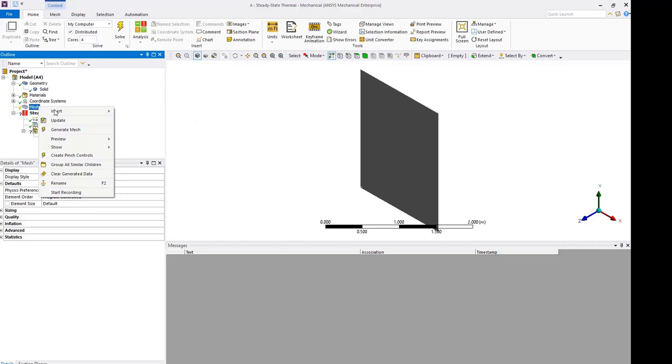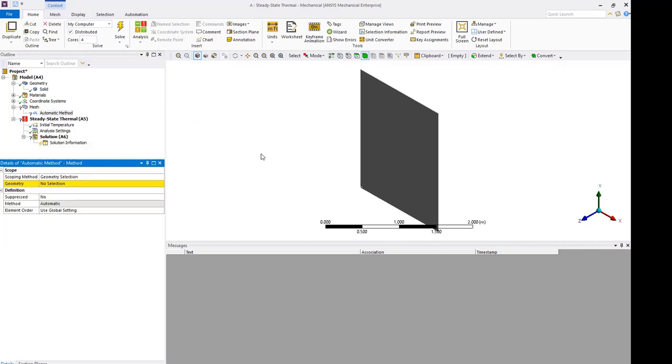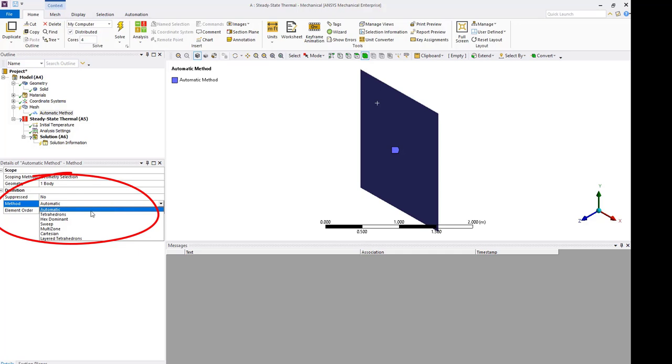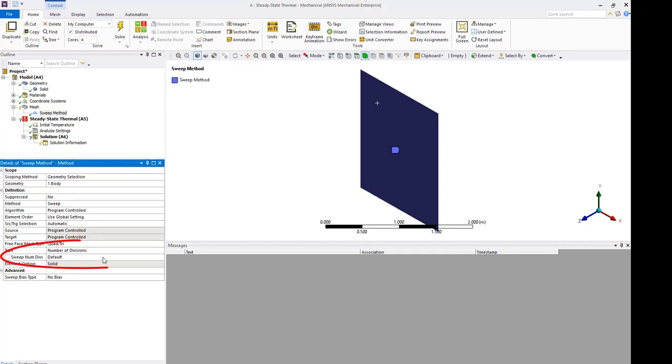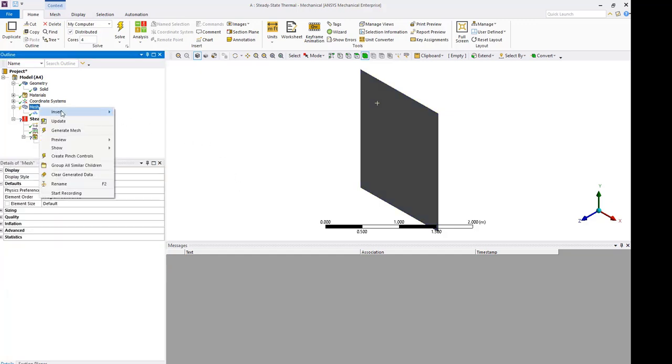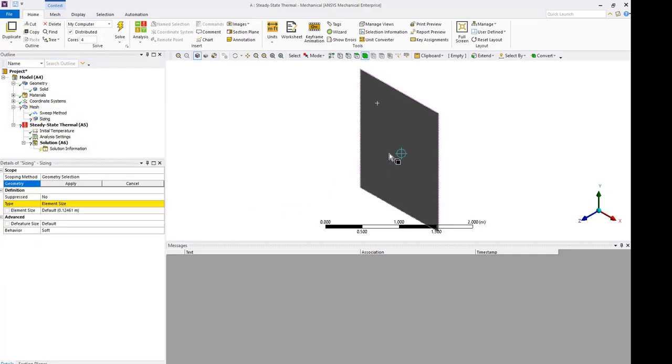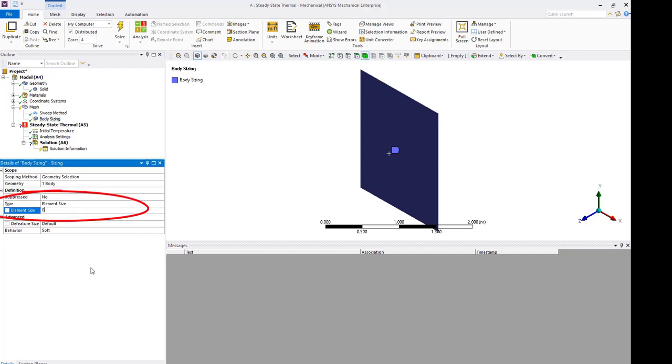Under mesh, insert sweet mesh. Set two elements through the thickness. Insert sizing. Set the element size value to 0.05 meters.